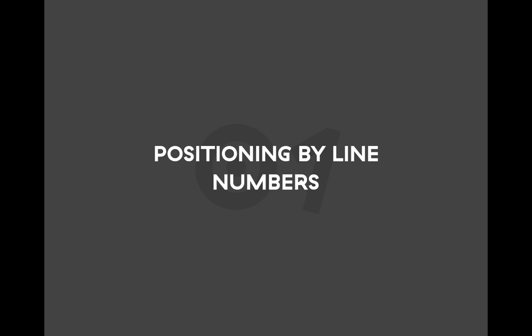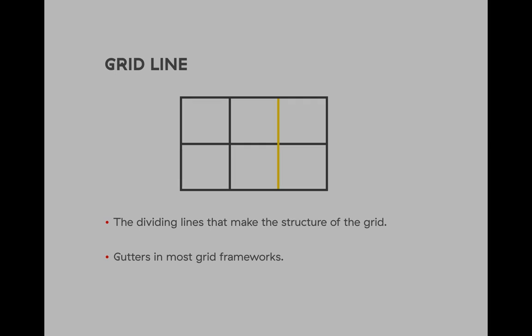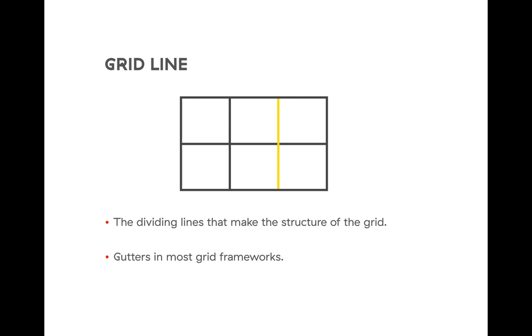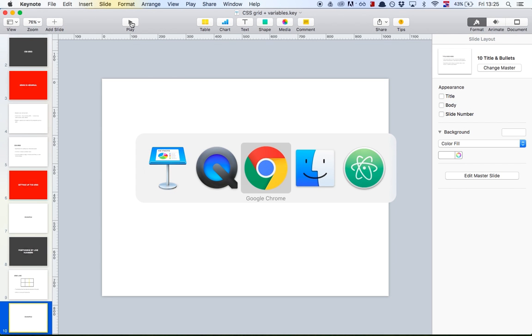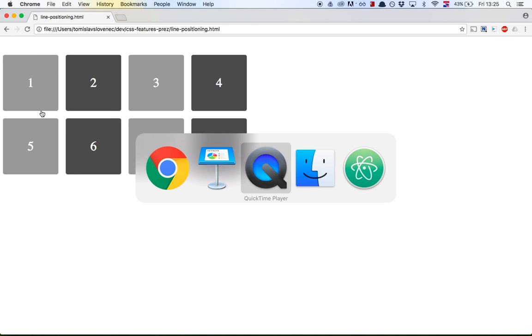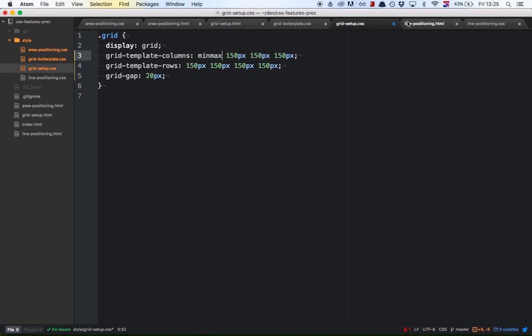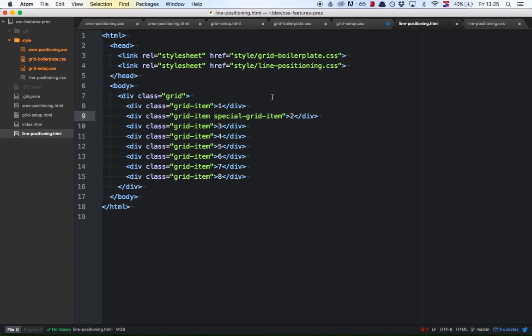CSS Grid is really flexible for building grid basics, but what about positioning and ordering? There are two types of positioning in CSS Grid. The first is positioning by line numbers, which introduces us to a new term called a grid line — any dividing line that makes up the structure of the grid, either horizontal or vertical. This is equivalent to gutters in most grid frameworks. The markup for line positioning is almost the same as before, with one difference: the second grid item has an extra class called 'special-grid-item' so we can target it more easily.